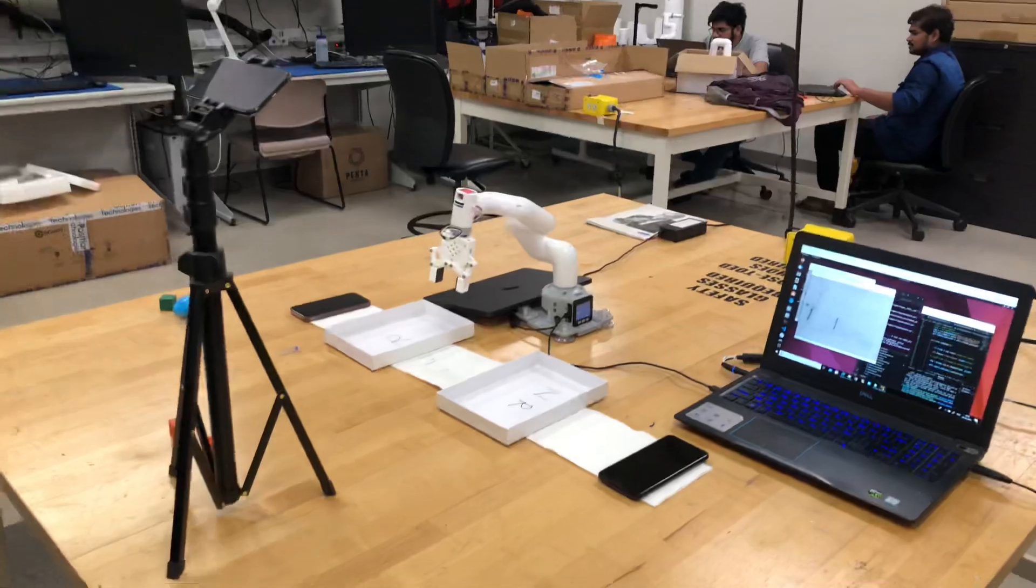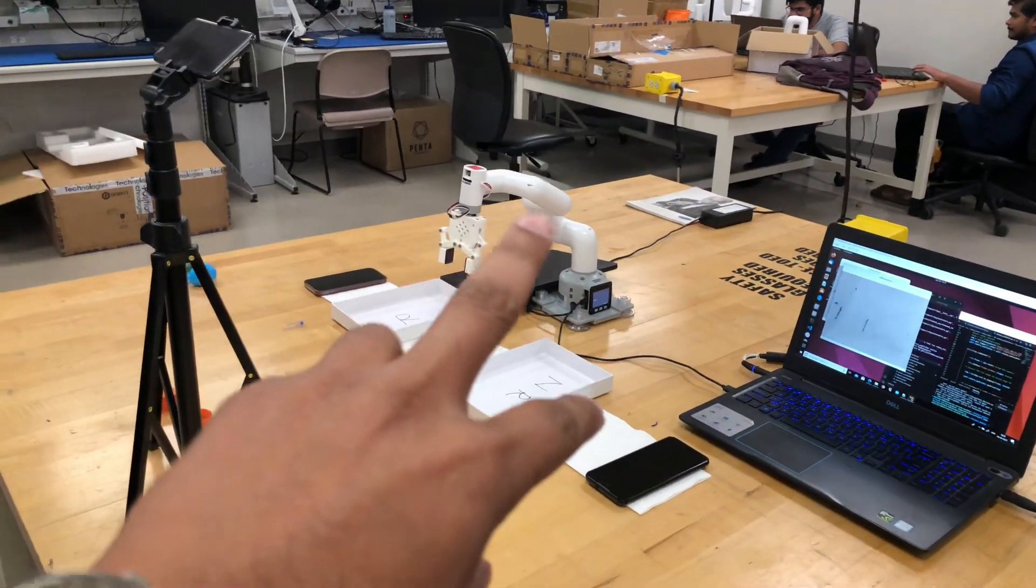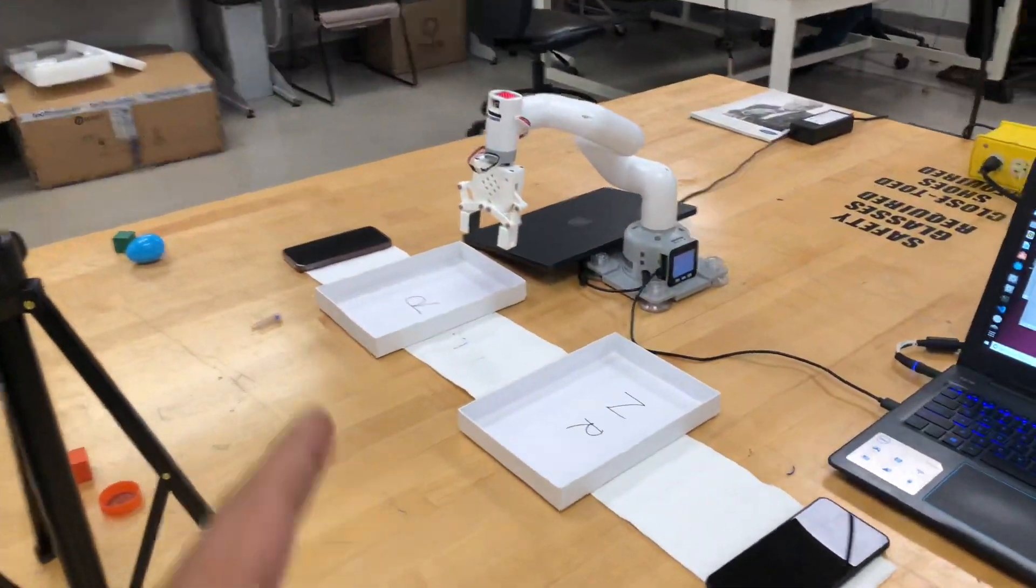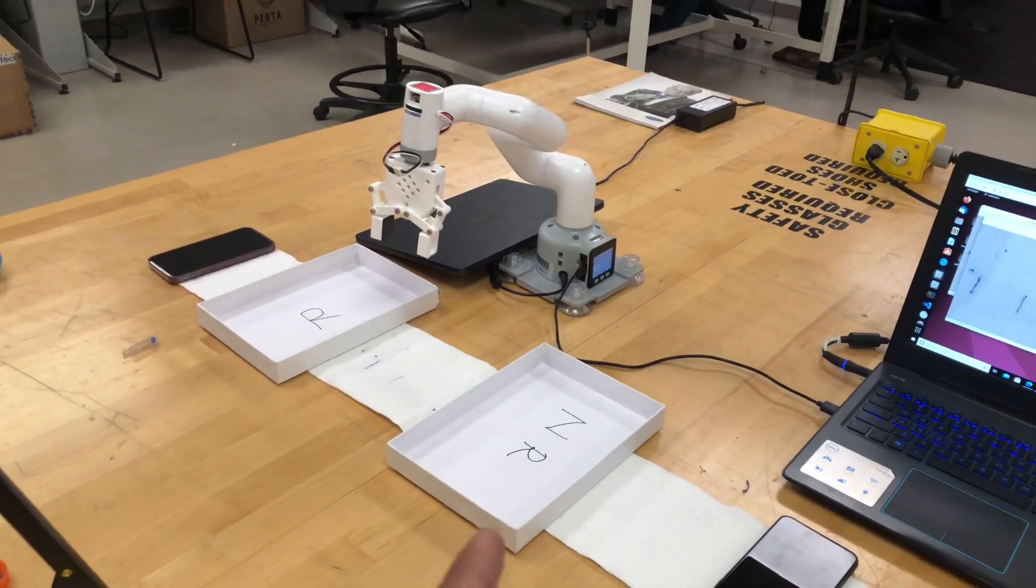Here is the setup for our project. As you can see, I've got the robot and we've got two bins over there. R means recyclable, NR means non-recyclable for the bins.